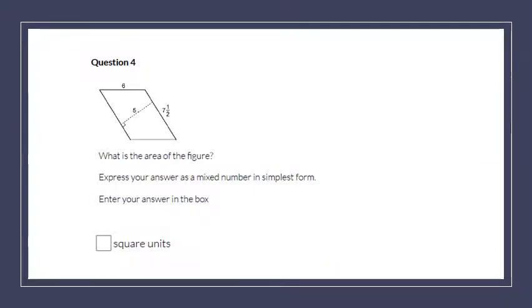Okay. What is the area of the figure? So I see my base is 7 and a half. And my height that is perpendicular to the base is 5. So I need to change 7 and a half to an improper fraction. 2 times 7 is 14 plus 1 is 15.